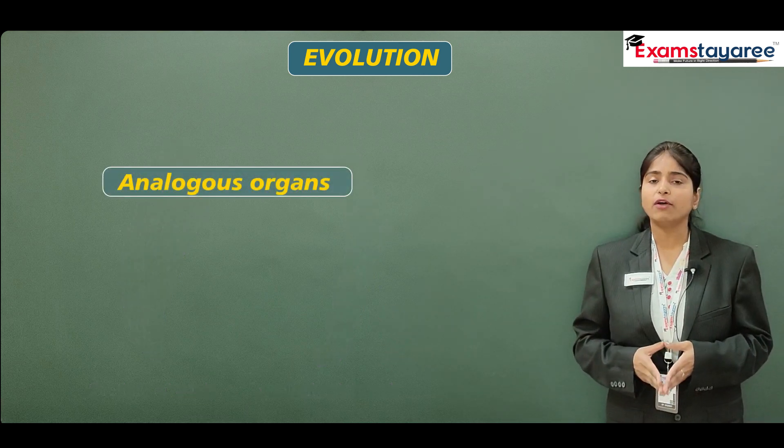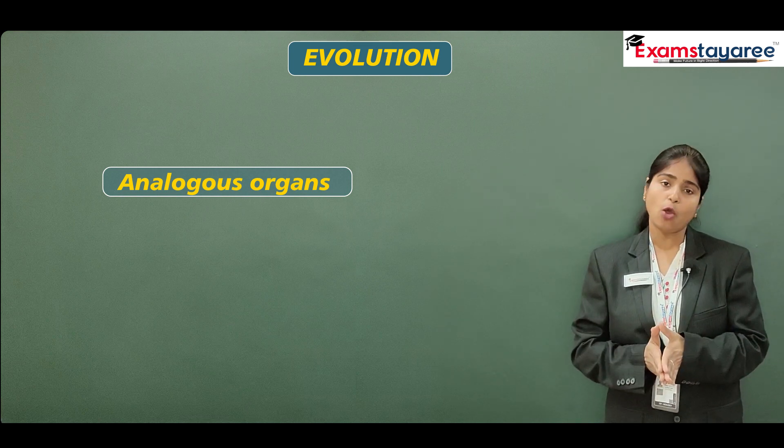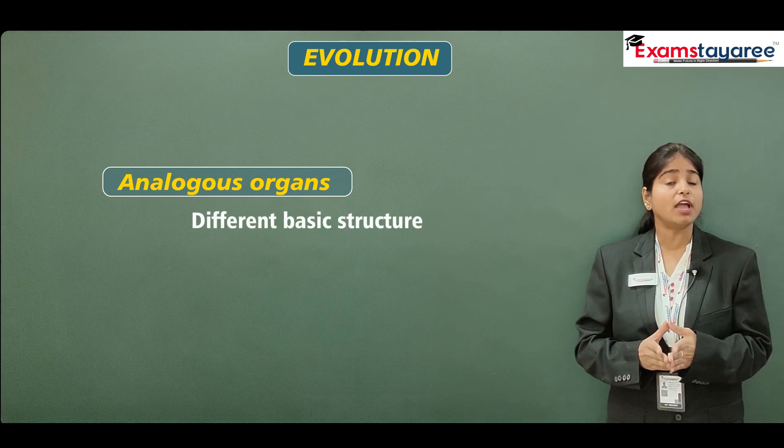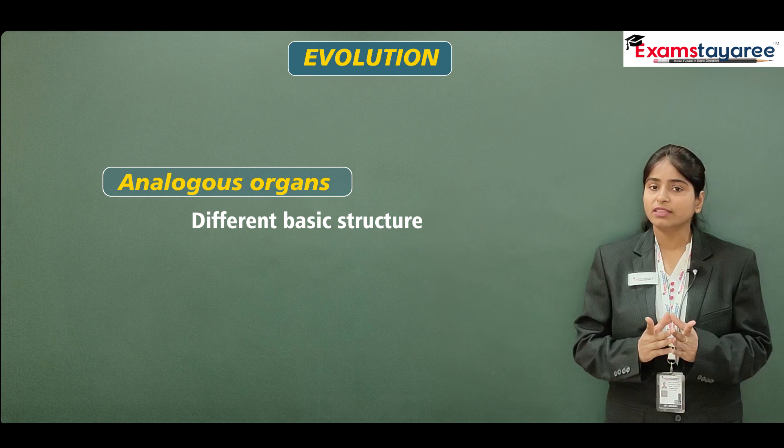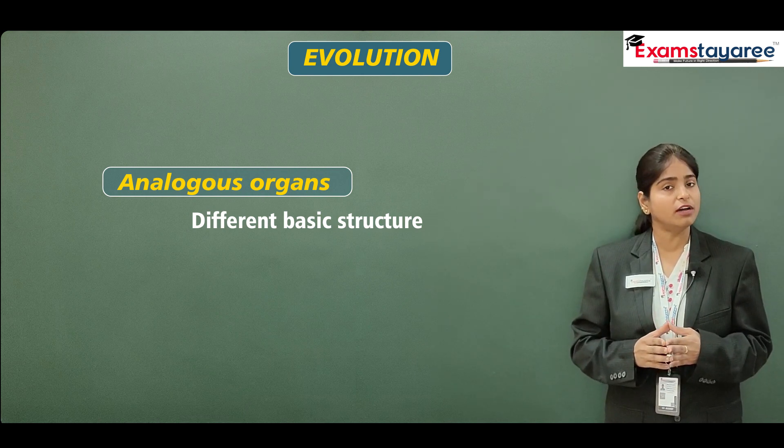Second one, we have analogous organs. Ye analogous bilkul opposite hai homologous organ ke. Analogous organs ke jo structure hota hai, basic structure that is different, but they perform similar functions.